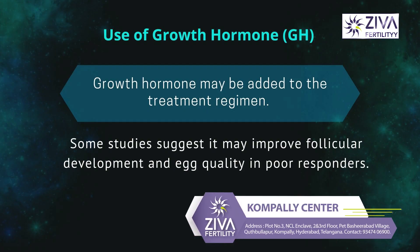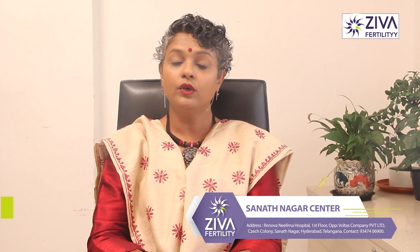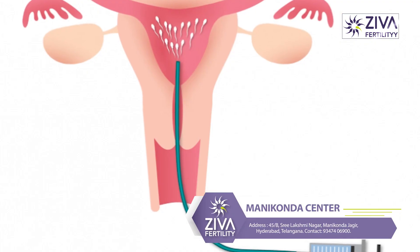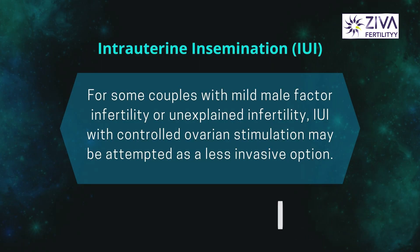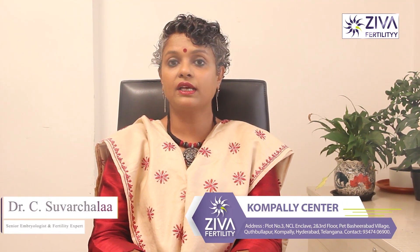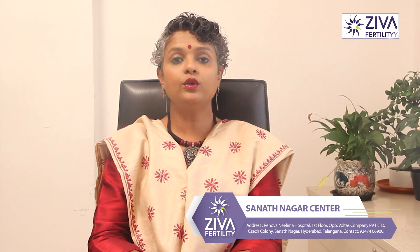Use of growth hormones can also be beneficial. Growth hormones may be added to the treatment regimen, as some studies suggest that it may improve follicular development and egg quality in poor responders. Intrauterine insemination may also work. For some couples with mild male factor infertility or unexplained infertility, IUI with controlled ovarian stimulation may be attempted as a less invasive option. In some cases where the patient is extremely sensitive to ovarian stimulation drugs, natural cycle IVF or modified natural cycle IVF may be considered. These approaches retrieve and fertilize the naturally selected egg without using high doses of stimulation medications.